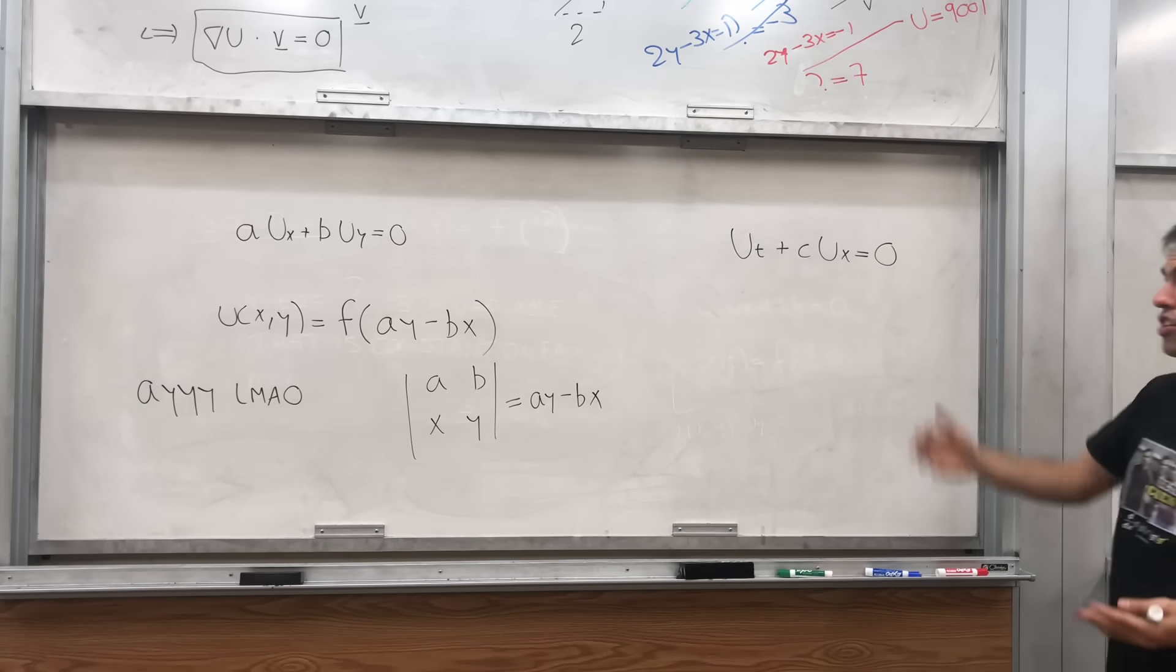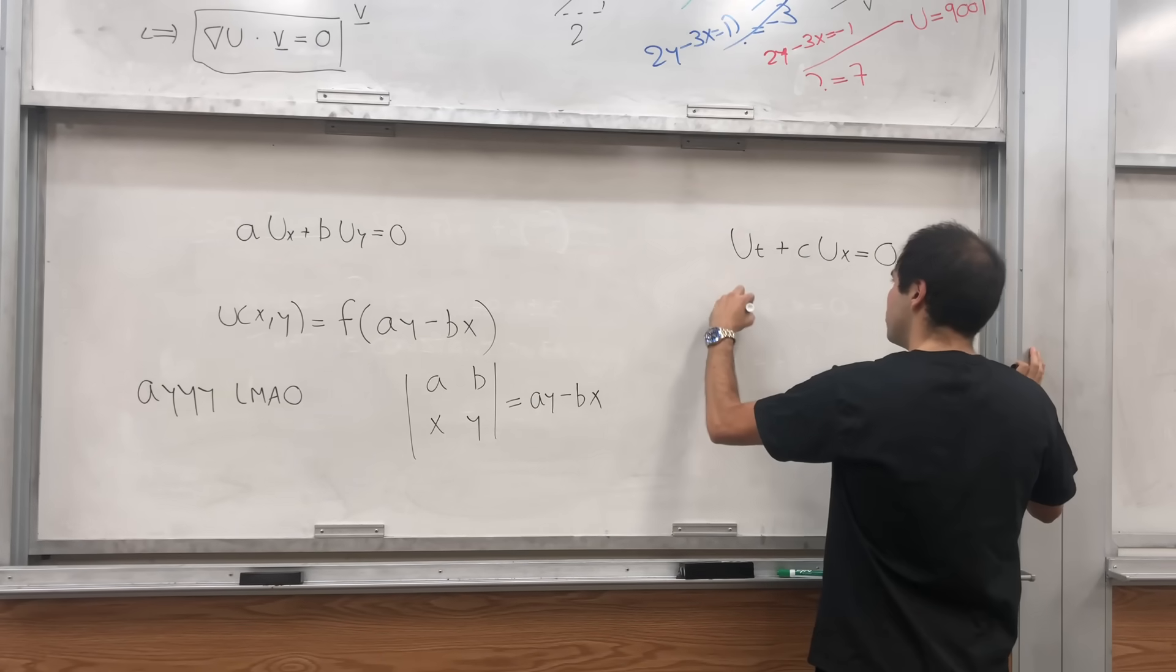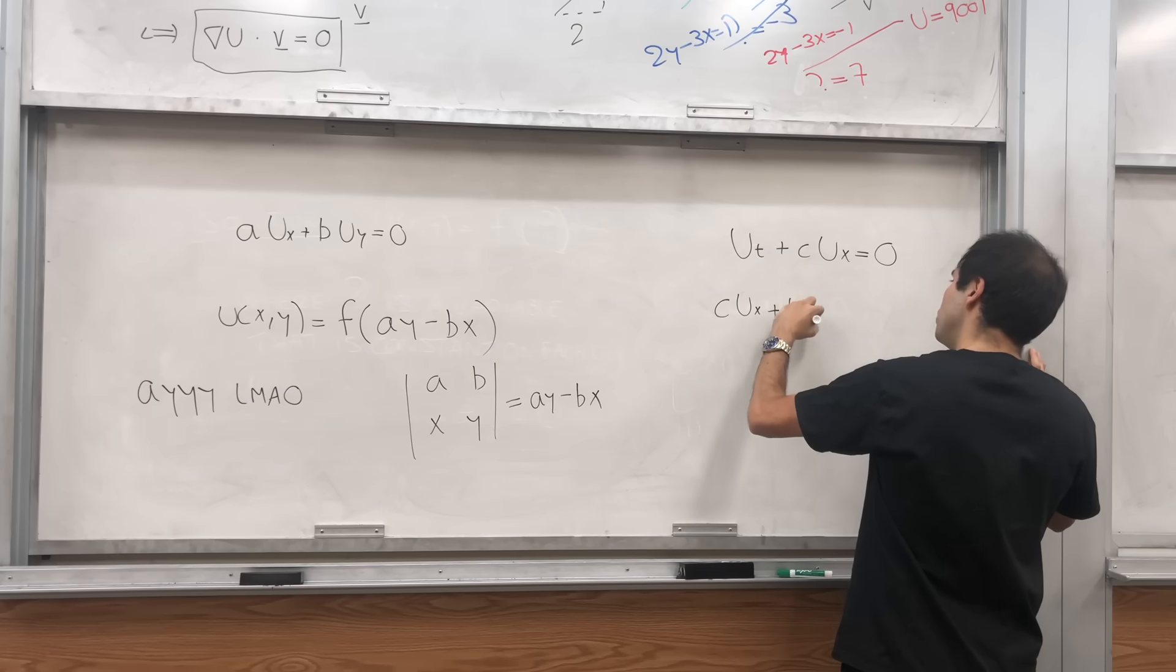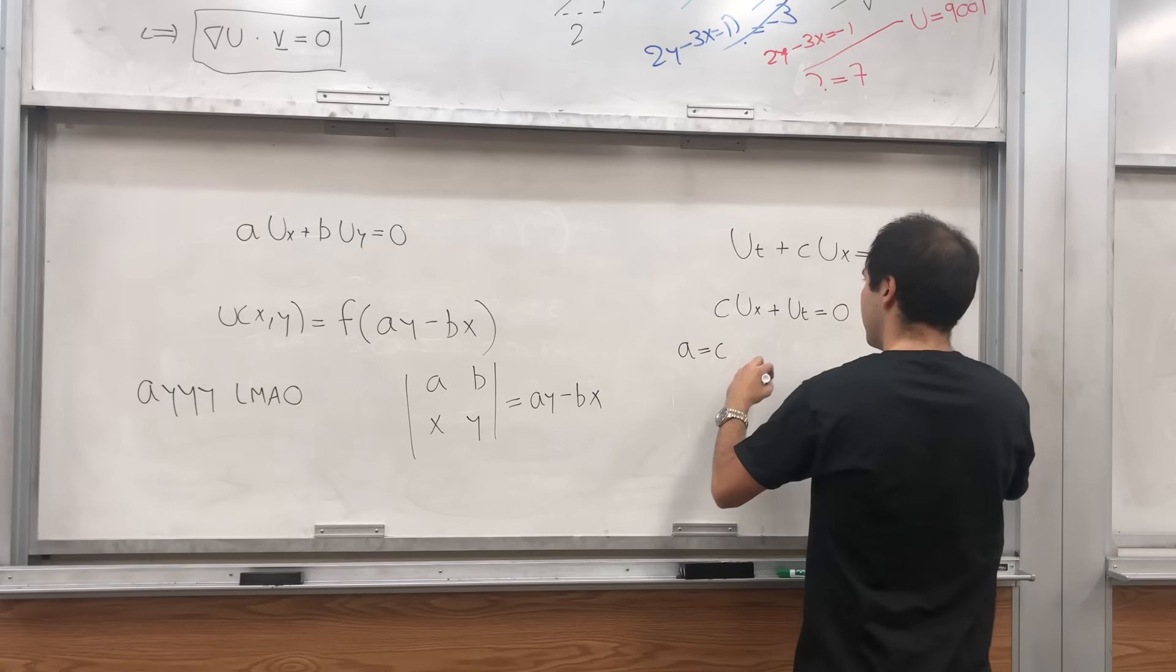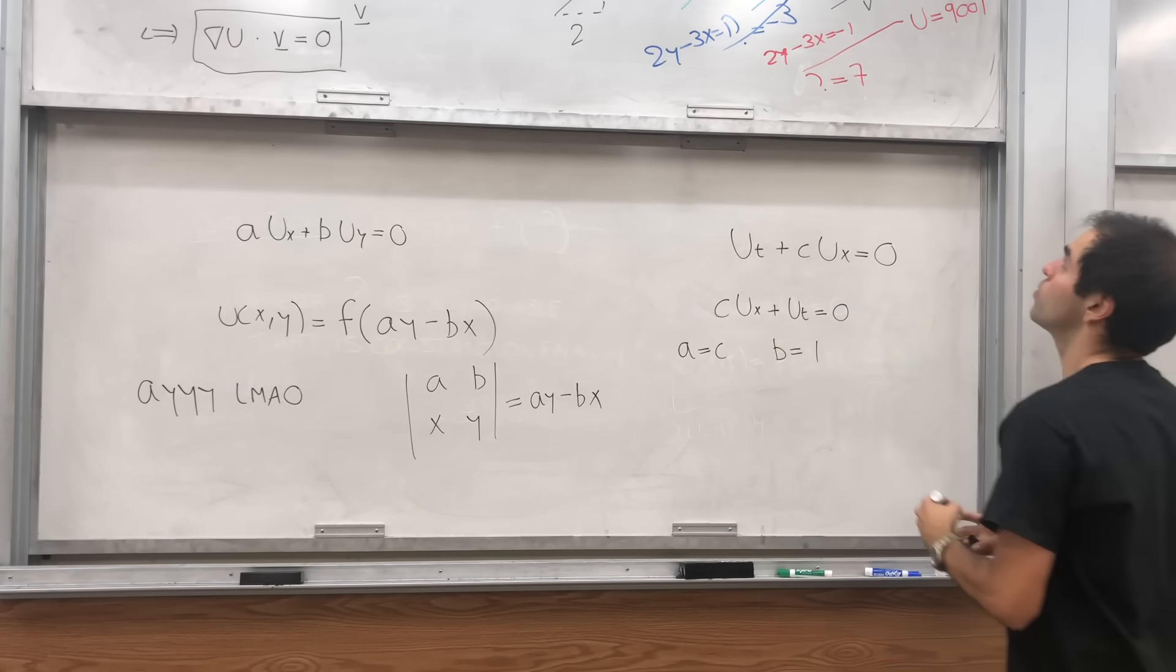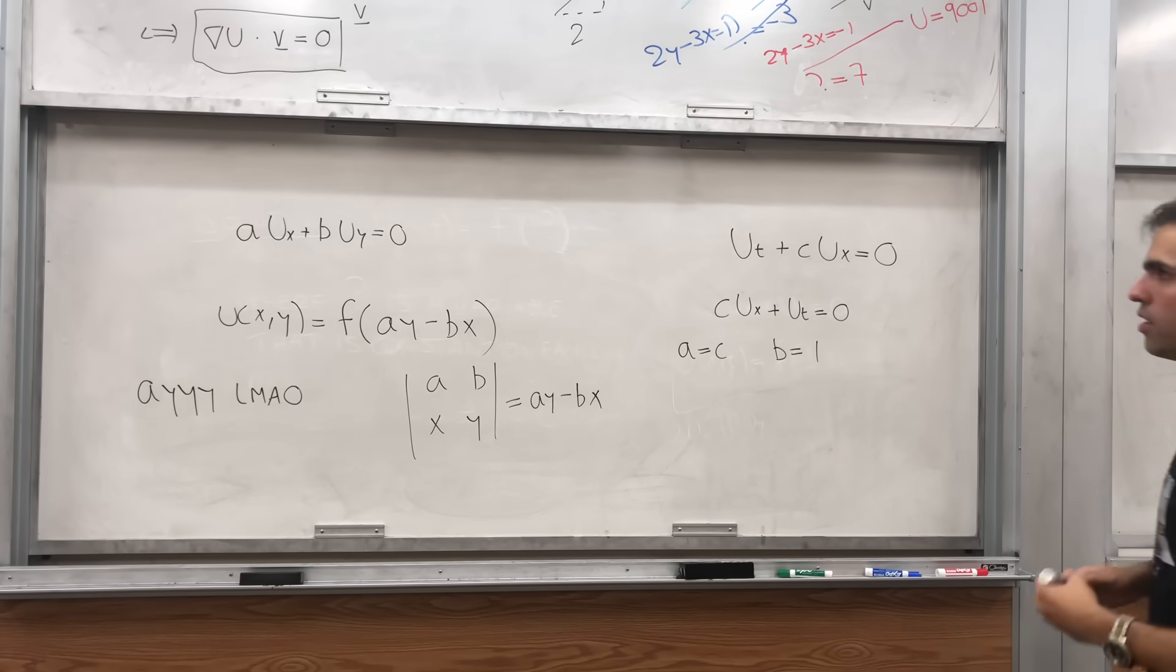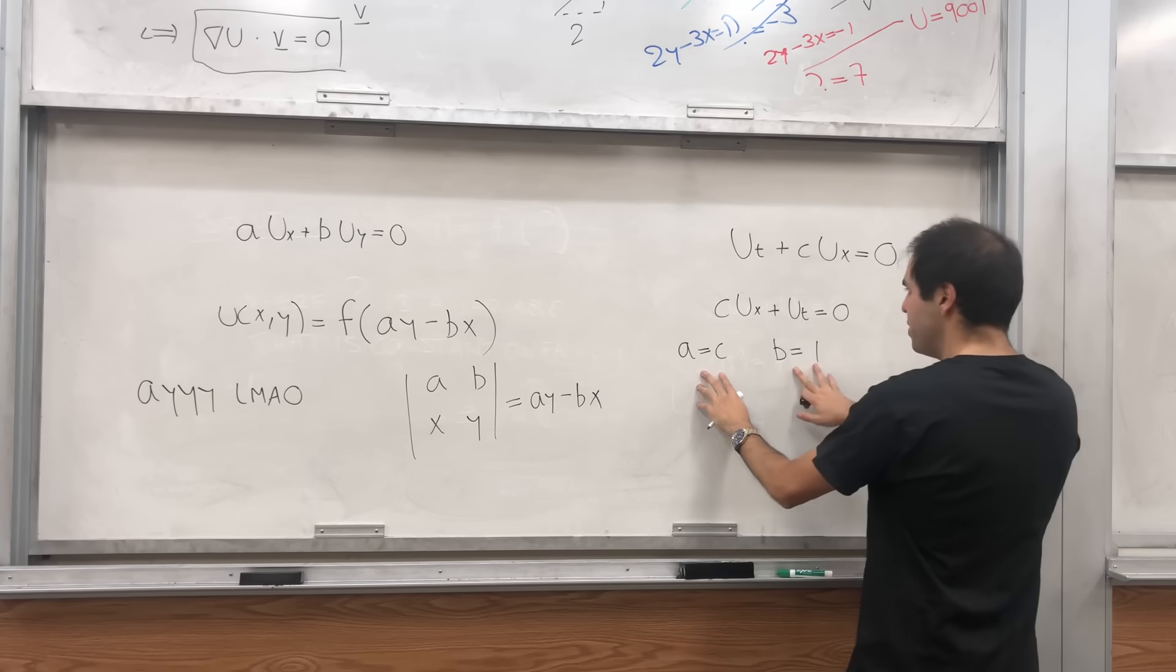And we can actually rewrite this in terms of our equation here. So, this is cux + ut equals zero. So, here, a equals c. And then, b equals one.